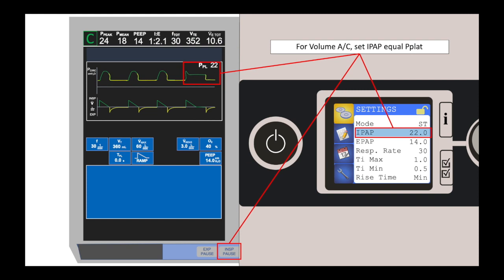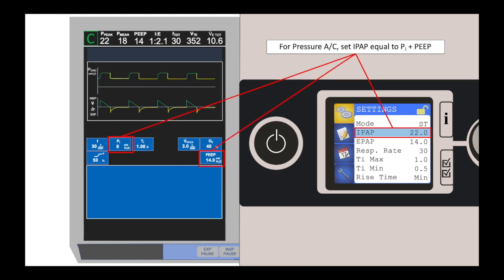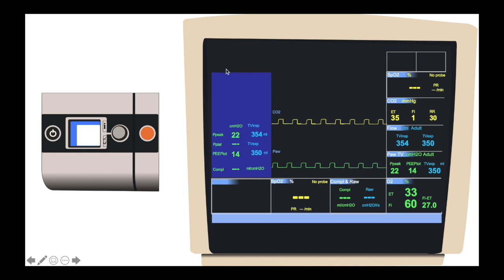If the patient is being switched from volume assist control, the inspiratory positive airway pressure, or IPAP, should be set equal to the plateau pressure. If the patient is being switched from the pressure assist control mode, the IPAP should be set equal to the sum of the PEEP and the delivered inspiratory pressure — so in this case, it's 14 plus 8, or 22. This is an anesthesia monitor set up to monitor flows, volumes, and inspired and expired gases using those gas sampling tubes shown in the setup slide.